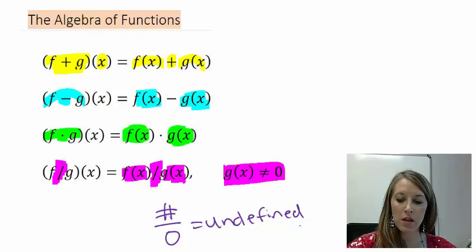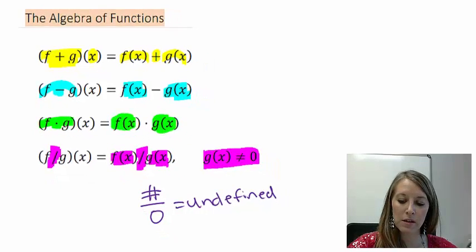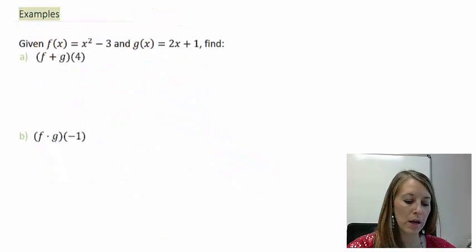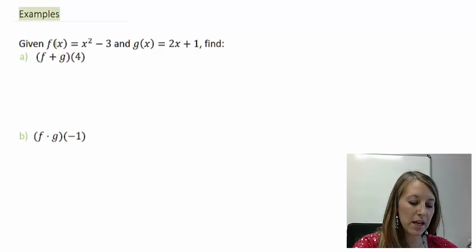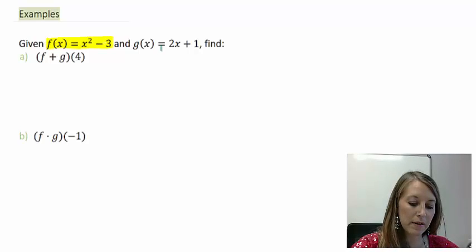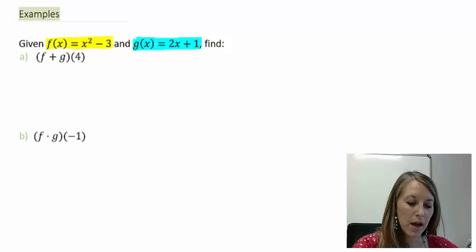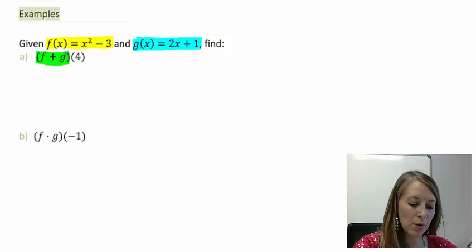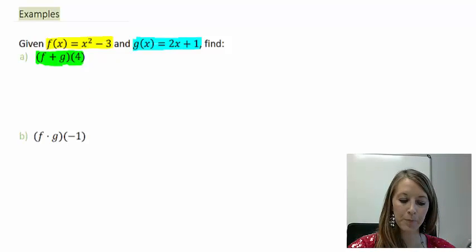These work out the exact way that you would expect them to, so let's jump right into an example. The first one gives us f(x) defined as x squared minus 3. The second gives us g(x) equals 2x plus 1. And what we're trying to find is f plus g, evaluated at 4.